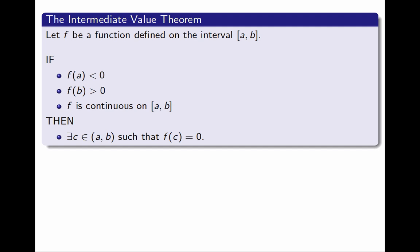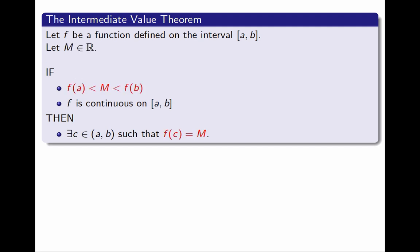Perhaps instead of looking at when the function takes the value 0, I may be looking at when it takes another value. So if I look at a real number m and I want to conclude that f takes the value m, I have to require that it is continuous and that it takes a value less than m and a value greater than m. In other words, we can always conclude that the function f will take all the values between f(a) and f(b).